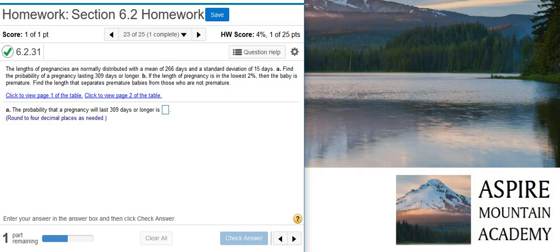Part A is asking us to find the probability that a pregnancy will last 309 days or longer. To do this, I'm going to use the normal distribution calculator in StatCrunch, and I know I need the normal distribution calculator because here in the problem statement, it says my data is normally distributed.